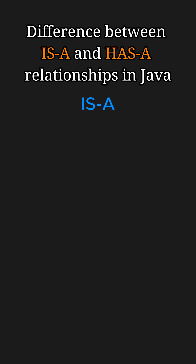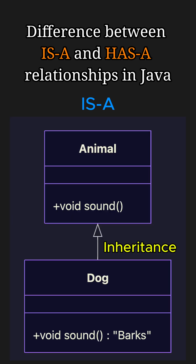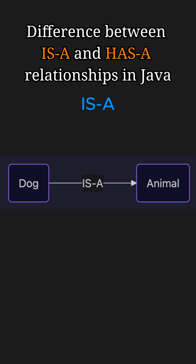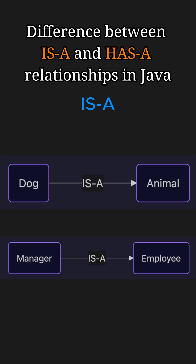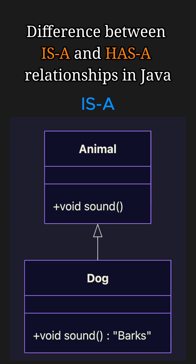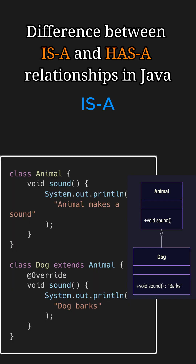An is-a relationship defines inheritance. It means one class is a specific type of another class. For example, dog is an animal, manager is an employee. In Java, this relationship is established using the extends keyword for class inheritance and the implements keyword for interface implementation. For example, a dog is an animal because the Dog class extends the Animal class.